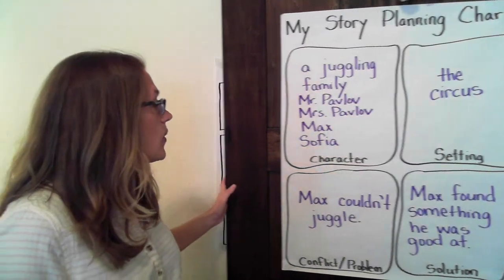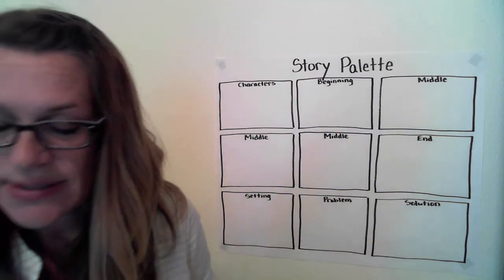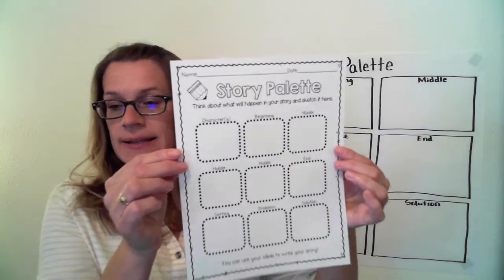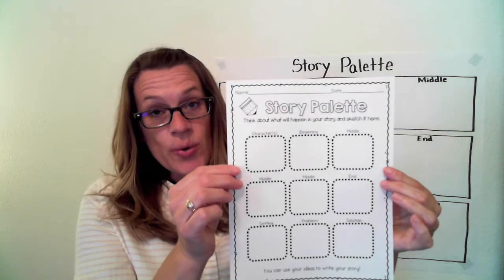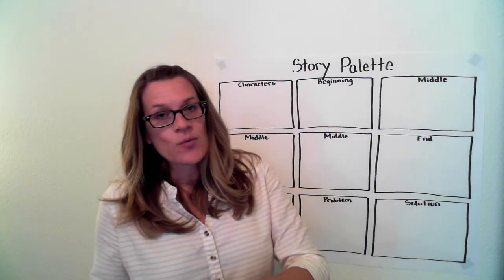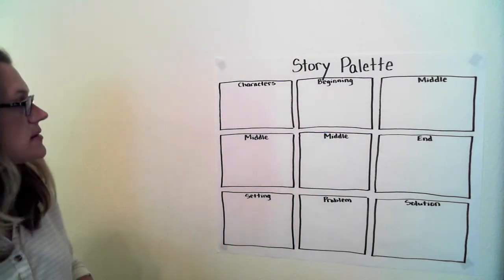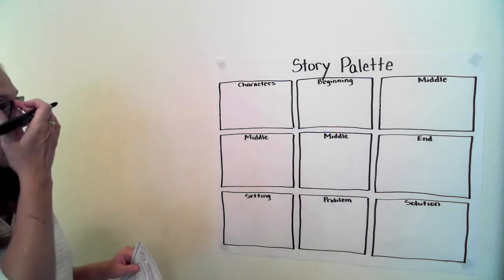We are going to look at our second chart that's going to help us with that process. This is called the story palette. This is the sheet I'm going to show you today how to fill out — to help guide us when we're finally sitting down to write our story. It gives us an idea of where we're going to start and where we're going to finish. I created a big chart with the same idea — nine boxes for us to fill in.